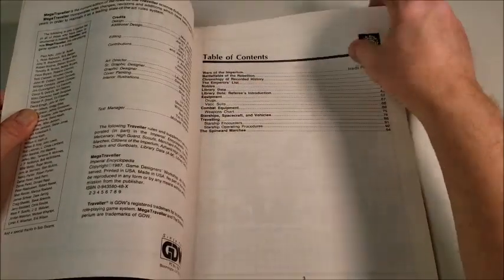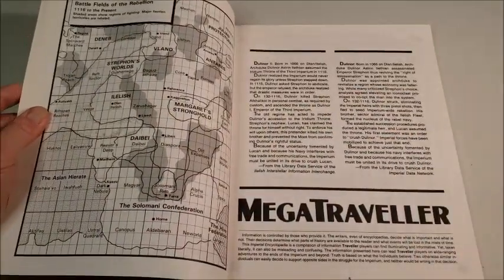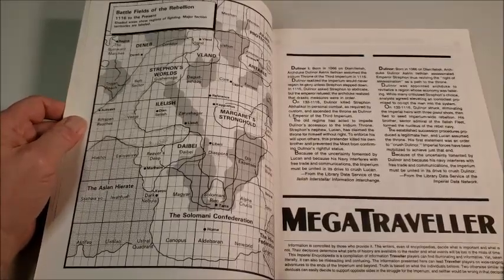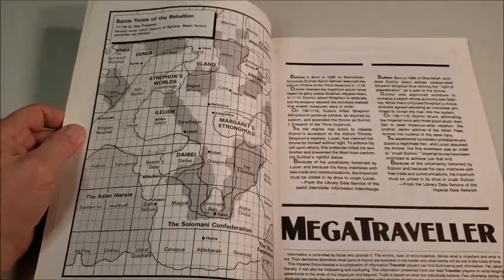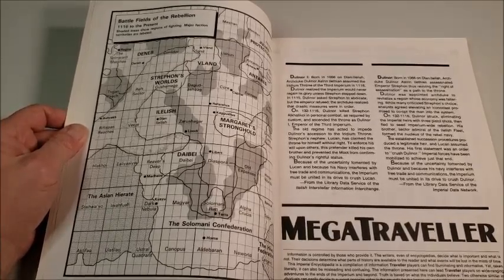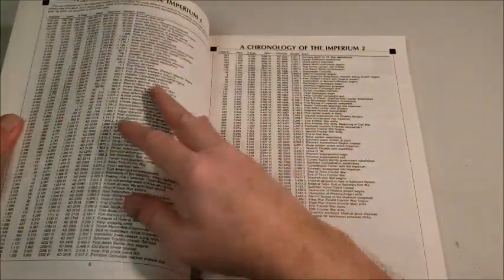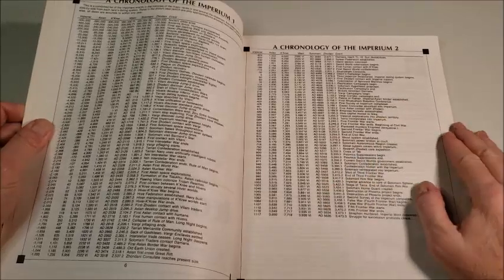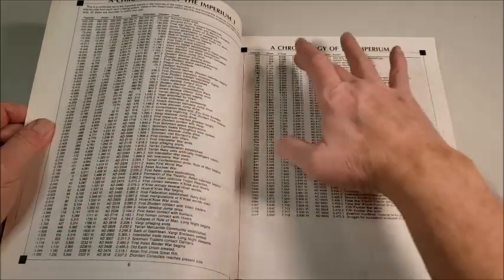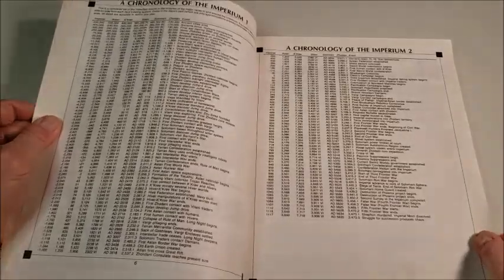So what you get in here is the wars of the Imperium. Here is the battlefields of the Rebellion. So here's a look at where everybody is at the beginning of the Rebellion, after Dulinor has shot Strephon on 132-1116, and begun the Rebellion. And this goes into a lot of the detail. Here's the chronology of the Imperium. All the way, this goes to negative 1000, and this takes us up to 1117, which is when this product would have been from.